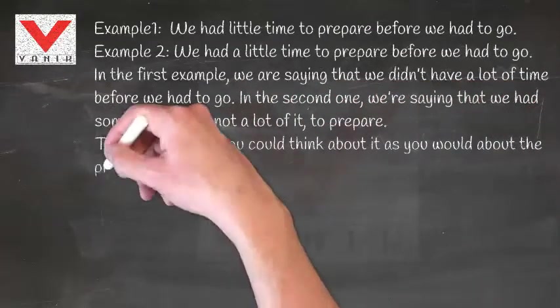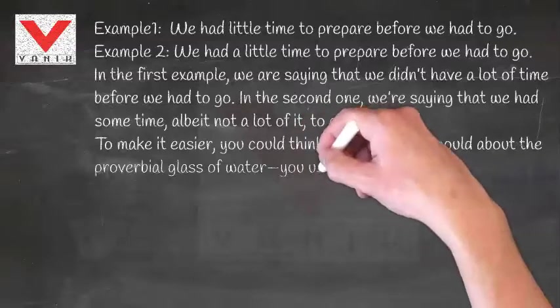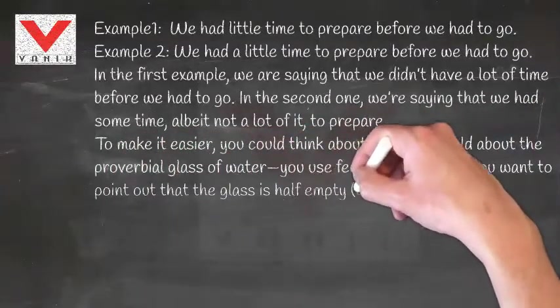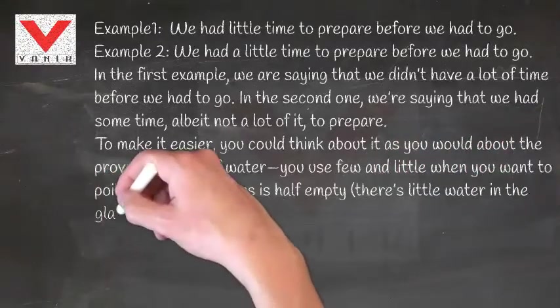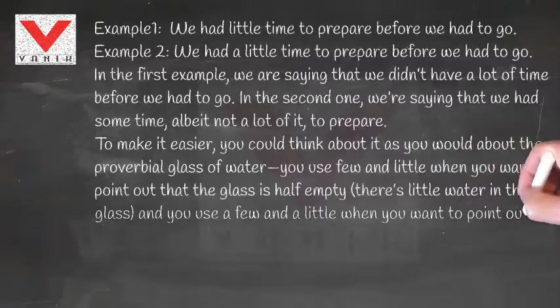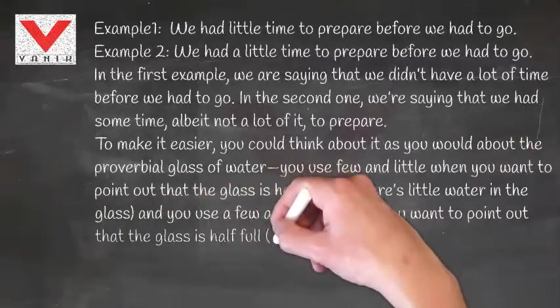To make it easier, you could think about it as you would about the proverbial glass of water. You use few and little when you want to point out that the glass is half empty. There's little water in the glass. And you use a few and a little when you want to point out that the glass is half full - at least there's some of it.